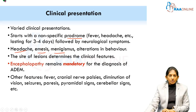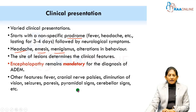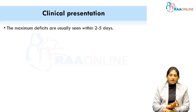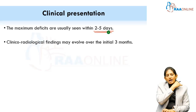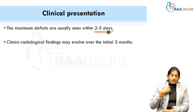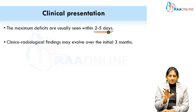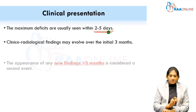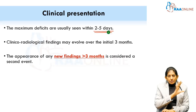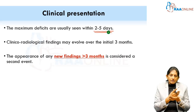Depending on the site of lesions, clinical features will vary. If lesions are in the cranial nuclei, cranial nerve palsies occur. If in the occipital region, diminution of vision and paresis occur. If in the pyramidal tract, pyramidal signs result; cerebellar involvement causes cerebellar signs. The maximum deficit is usually seen within the first two to five days, which is very important. Radiological findings can evolve over the initial three months, but the peak is reached in the first one week.